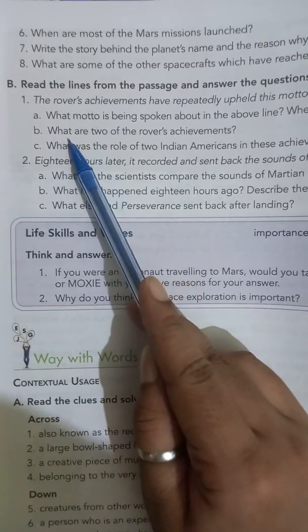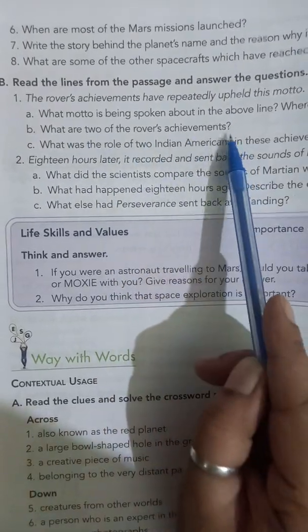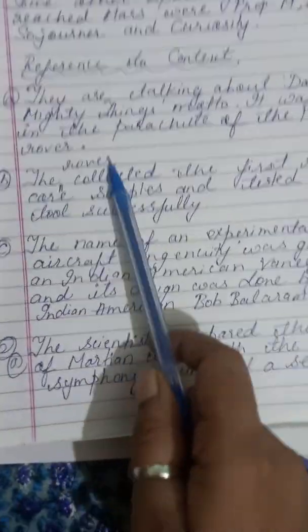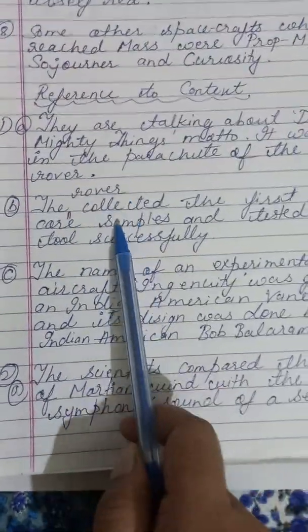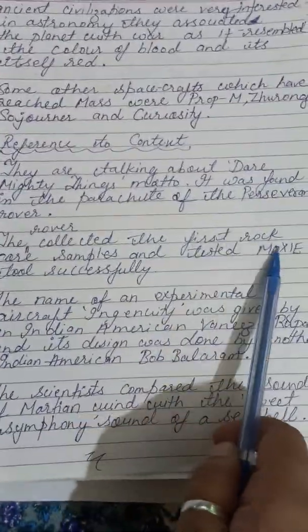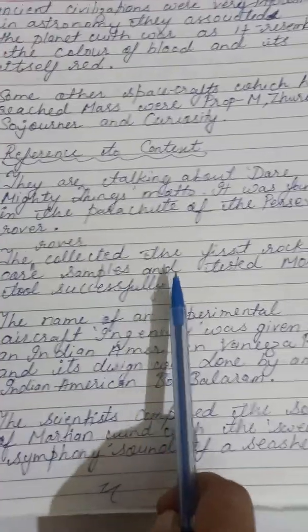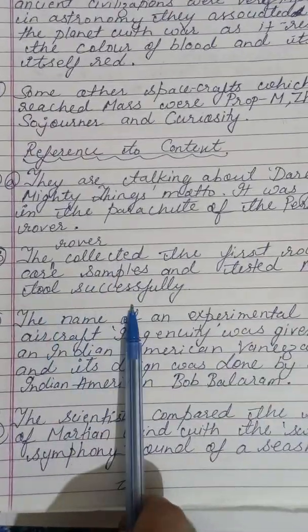The next question: what are two of the rover's achievements? The rover collected the first rock core samples and tested the MOXIE tool successfully.